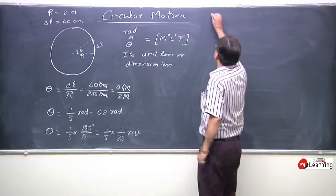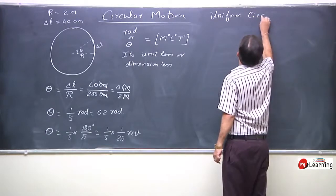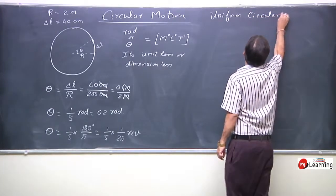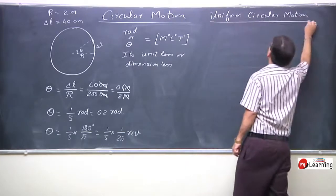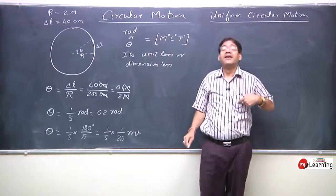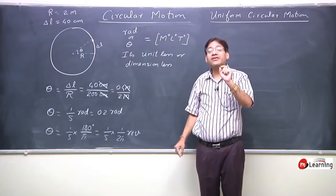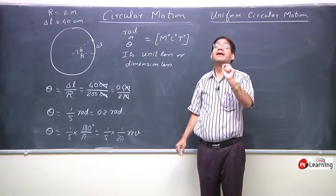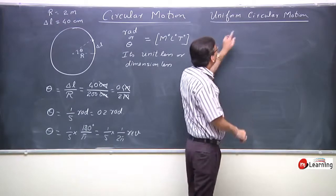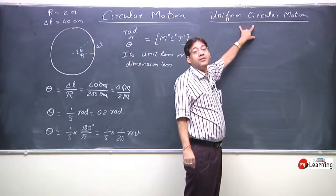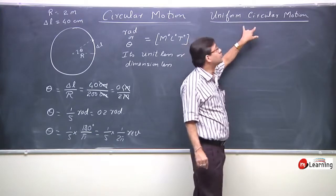Uniform Circular Motion. If a particle moves on a circular path with constant angular velocity and constant linear velocity, then the motion of the particle would be termed as Uniform Circular Motion.